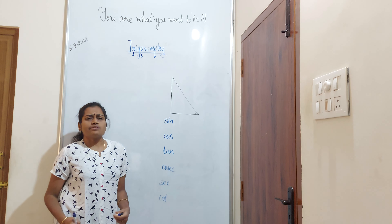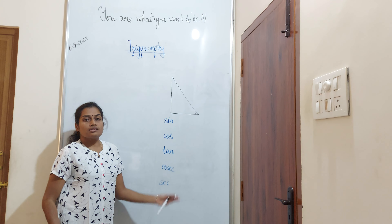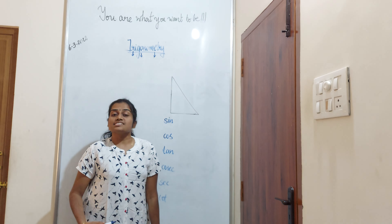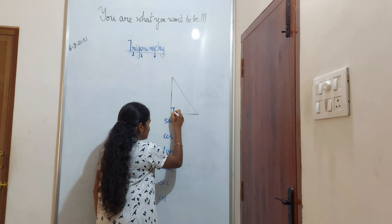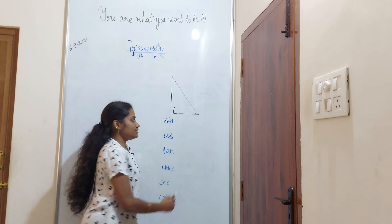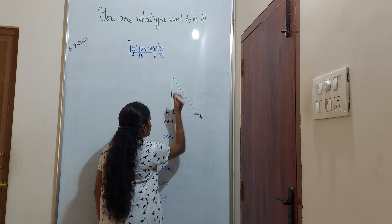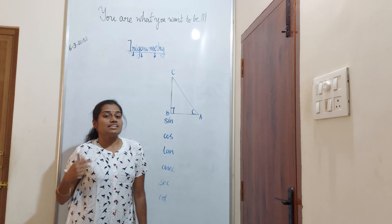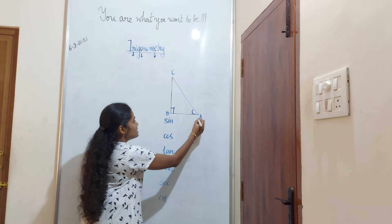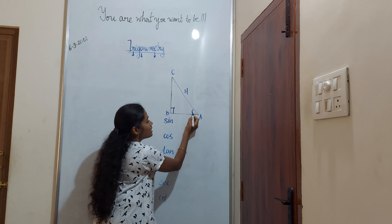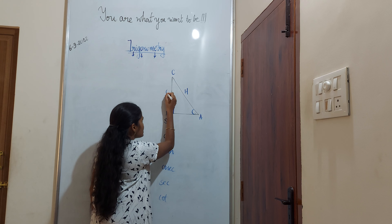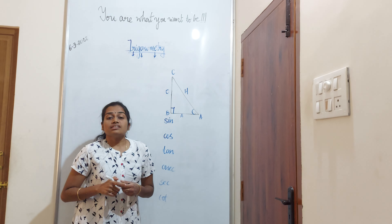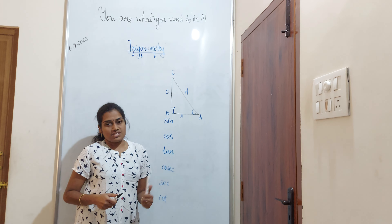Now let us go to the class. Before going to the class, let us quickly revise what we saw in the previous classes — you will use these concepts to derive this. So now let us take the basic right angle triangle. When I say it is a right angle triangle, I mark 90 degrees. Now I will name the vertices of this triangle: this is A, this is B, and this is C. Here, my angle A is an acute angle. So now this side AC is the hypotenuse. The side opposite to this angle I mark as O, and this is my adjacent side.